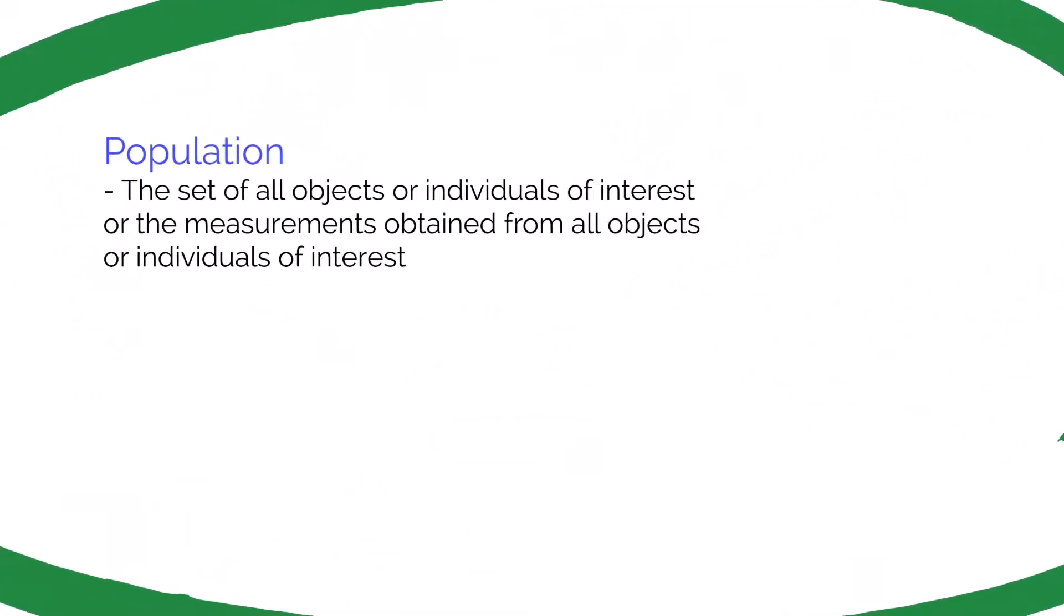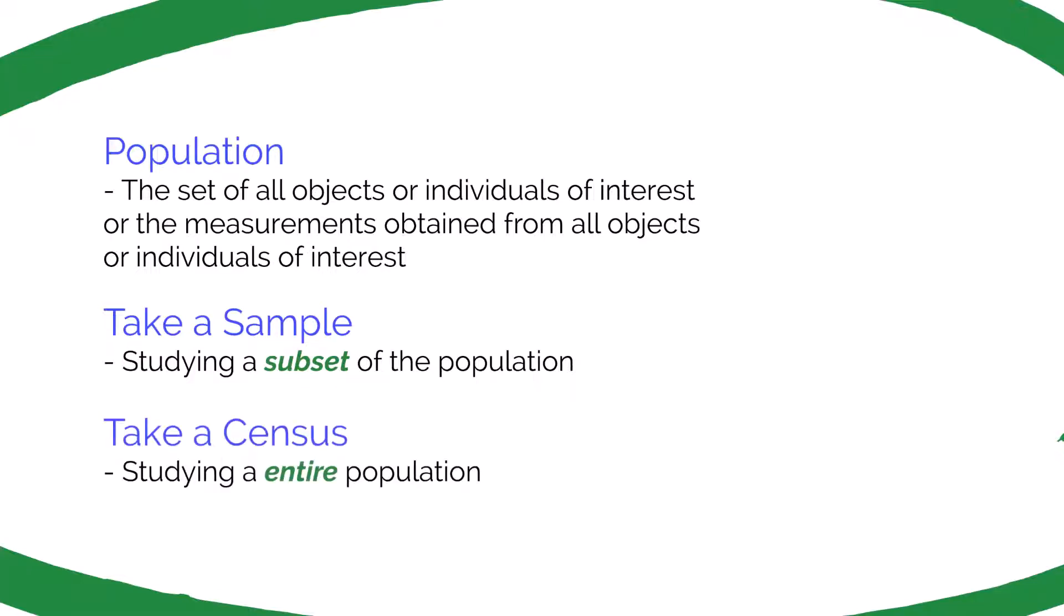A population is a set of all objects or individuals of interest, or the measurements obtained from all objects or individuals of interest. For example, a population of interest might be all students at a college. When we take a sample, we're going to study a subset of that population. And then if we take a census, we are simply studying the entire population.